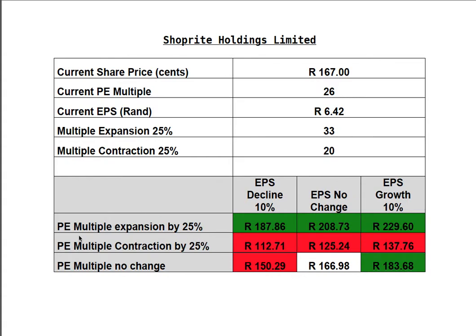The most positive long position for the share will happen with an EPS growth of 10% and a multiple expansion of 25%, giving you about 230 Rand per share. If the EPS were not to change, we would see about 208 to 209 Rand per share.